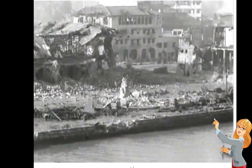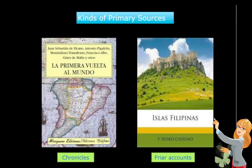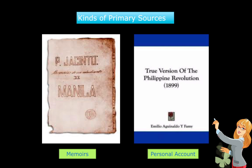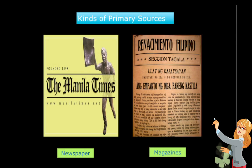Other kinds of primary sources include chronicles and friar accounts, memoirs such as those by Pio Jacinto, and personal accounts by Aguinaldo. We also have newspapers and magazines. If our topic is an event from the 1930s, newspapers and magazines from that time are primary sources. However, if today's newspapers are telling stories about what happened in the 1930s, those are considered secondary sources — it depends on how you treat or use them.